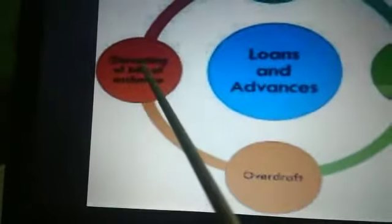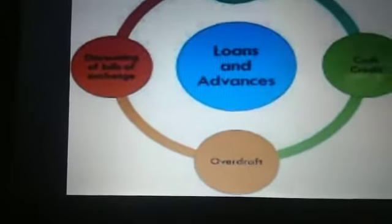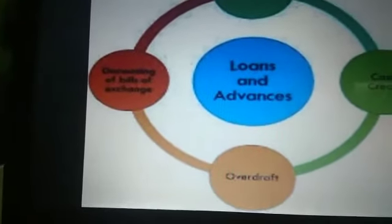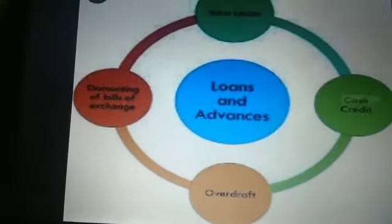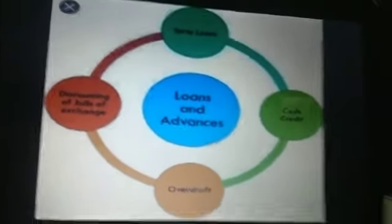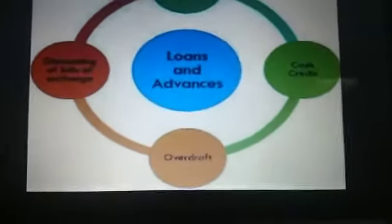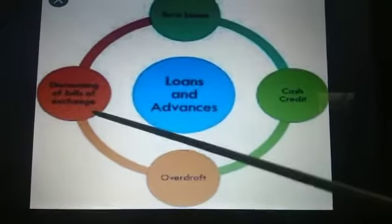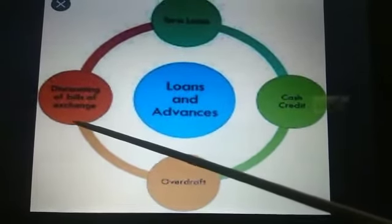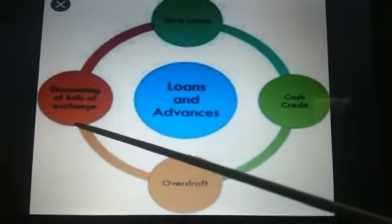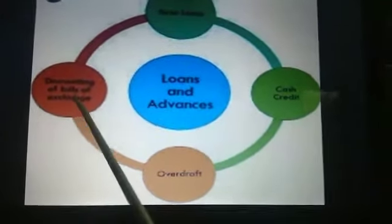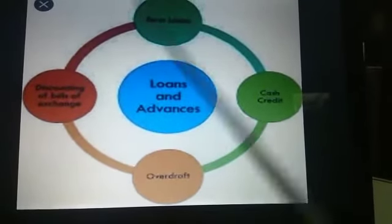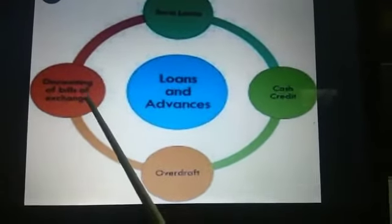The last one is discounting of bills of exchange. A bill of exchange is a statement entered into by a seller and a buyer. Suppose a buyer does not have money to pay for the goods he purchases from the seller — he can give a bill of exchange. In this bill he will mention what amount of goods he has purchased and when he is going to pay the amount back. Suppose he purchases goods in January and promises to pay in April.